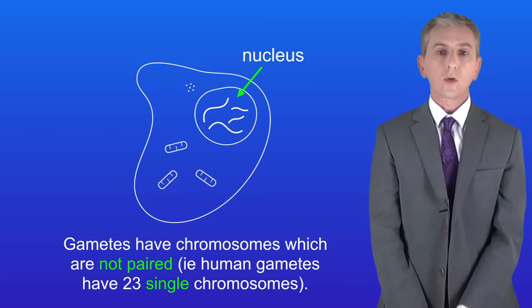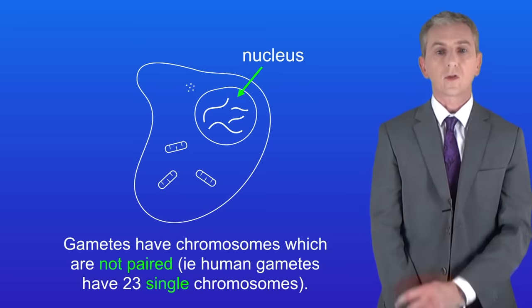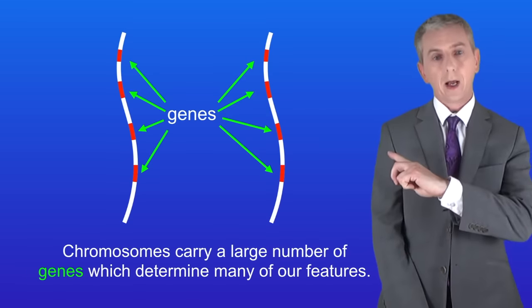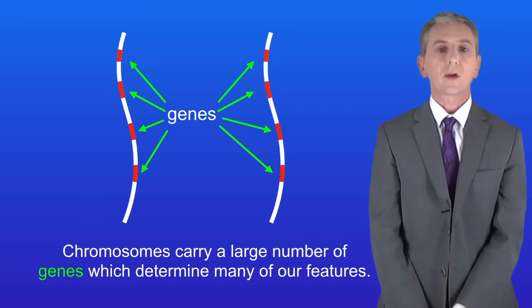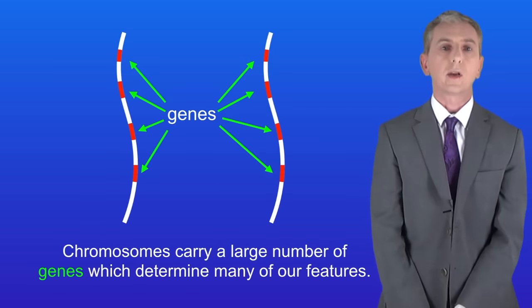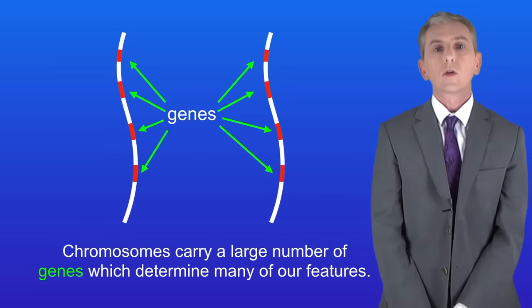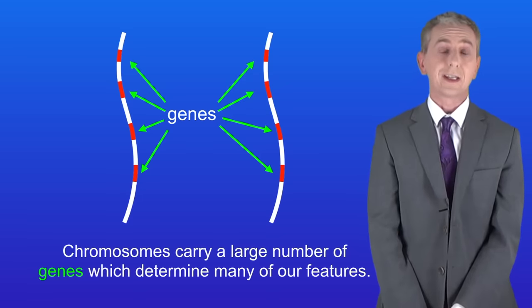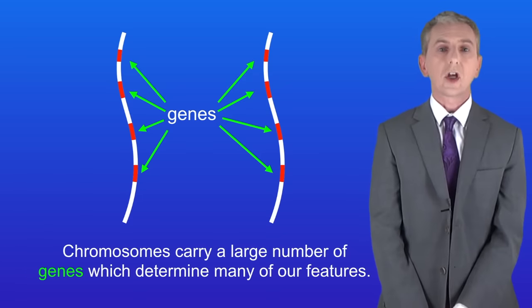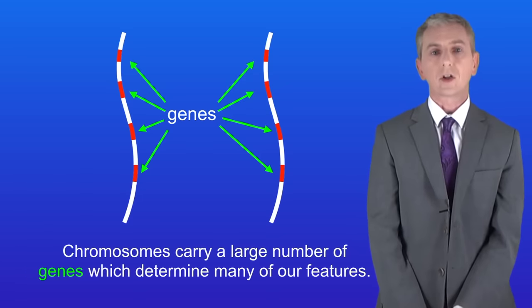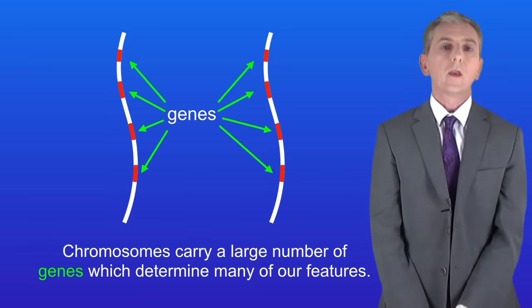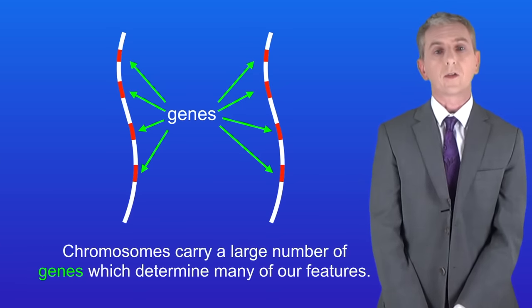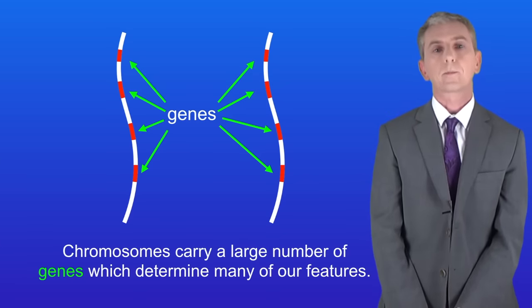Here is a close-up of a pair of chromosomes, and that brings us to our second key point. Chromosomes carry a large number of genes, and these determine many of our features. These chromosomes only have four genes shown, but most human chromosomes contain hundreds.